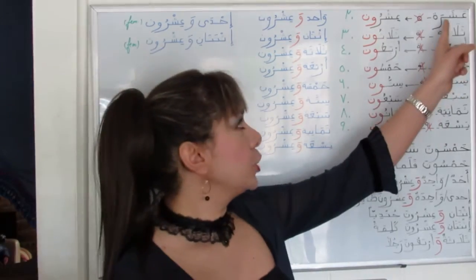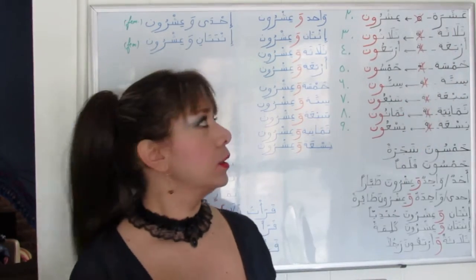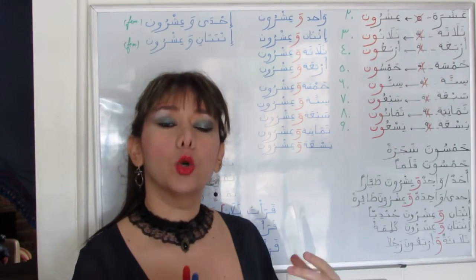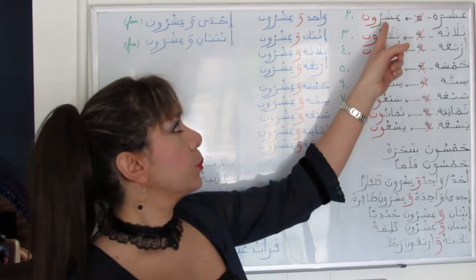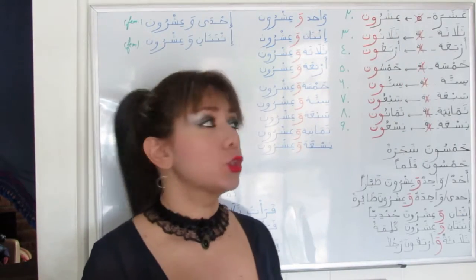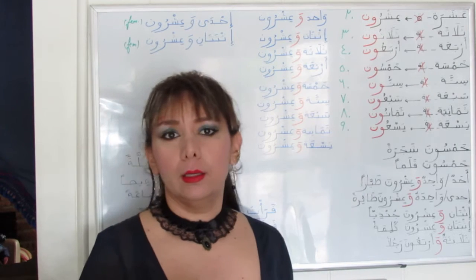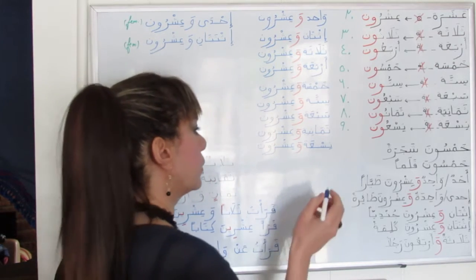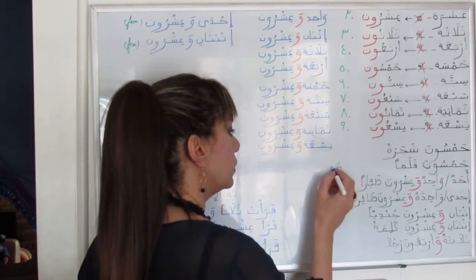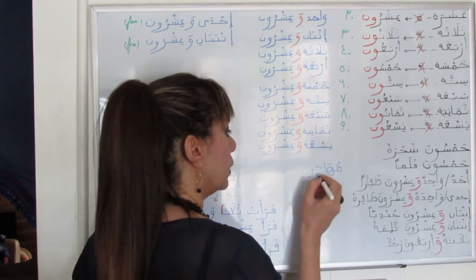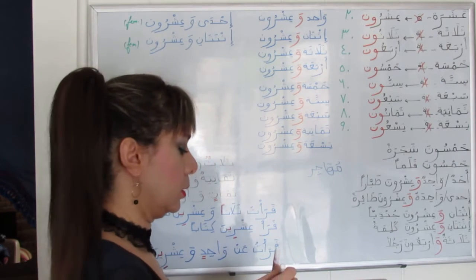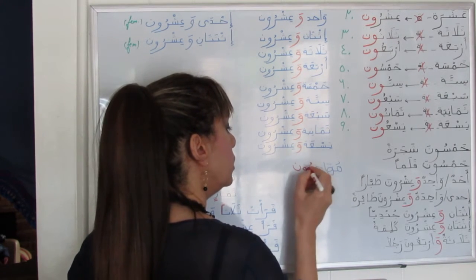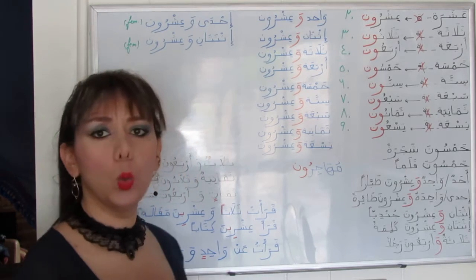عشرة (ten) drops its تا مربوطة to receive the suffix ون preceded by ضمّة. ون is a suffix of plural. For example, مهاجر (immigrant) and its plural is مهاجرون with the suffix ون — مهاجرون, immigrants.